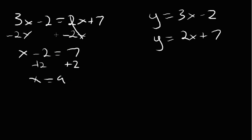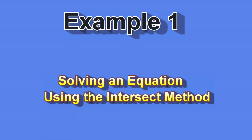To use the intersection method, each side of the equation is viewed as the output of a function. The solutions of the equation represent inputs that produce equal outputs — so an input of 9 produces equal outputs of 25. We will graph each side of the equation as its own separate function, and the solution will be the x-coordinates of the points where the two graphs intersect.